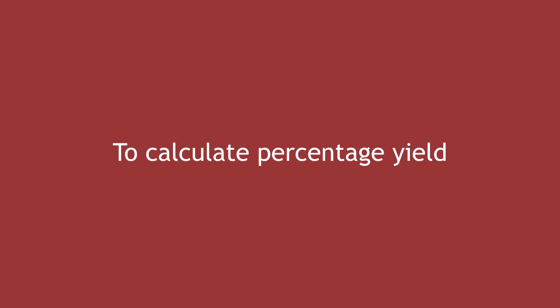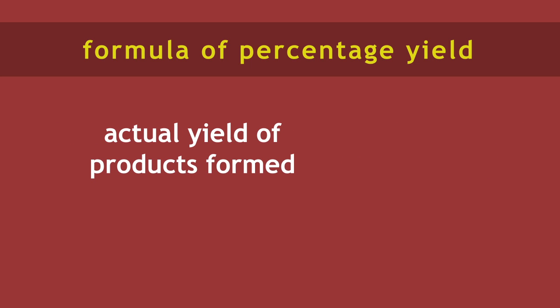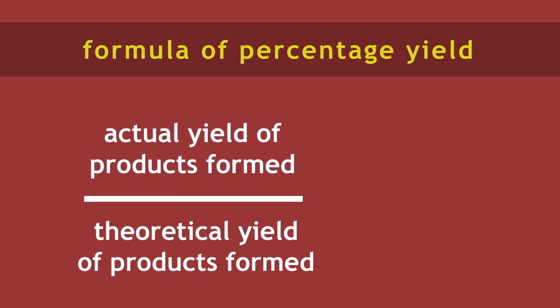To calculate percentage yield, we therefore do the actual yield of product formed, divided by the theoretical yield of product formed, multiplied by 100.